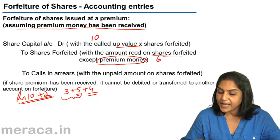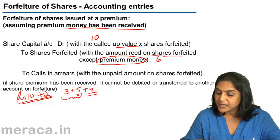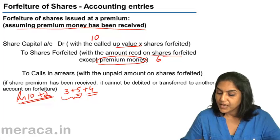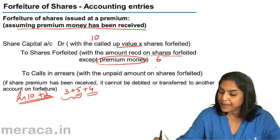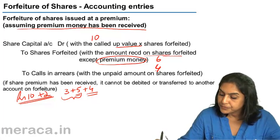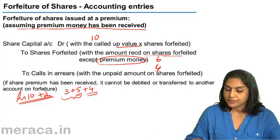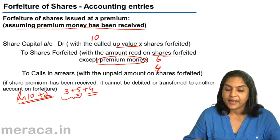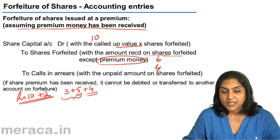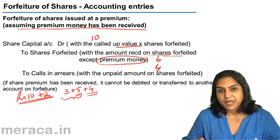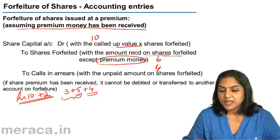To Calls in Arrears, the amount would be 4 — the amount which is not paid. This is how the entry for forfeiture of a share issued at a premium would be passed, assuming the premium money has been received.